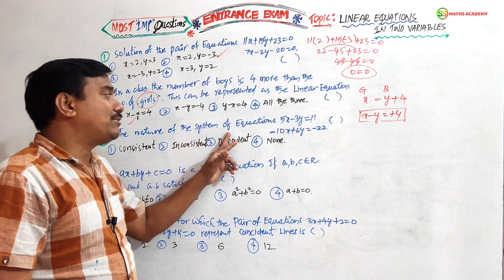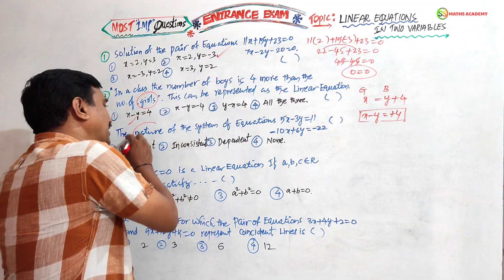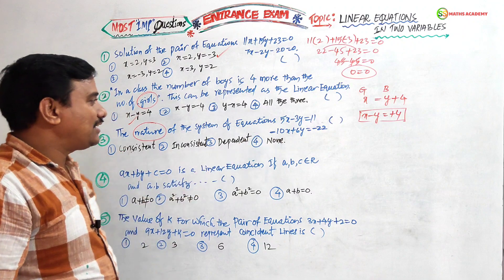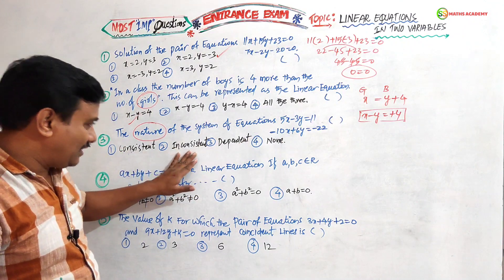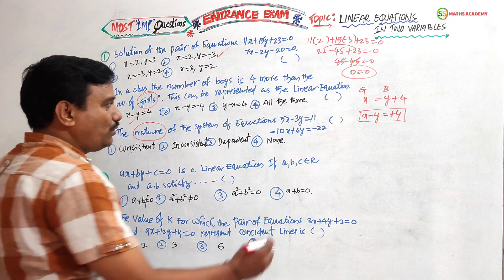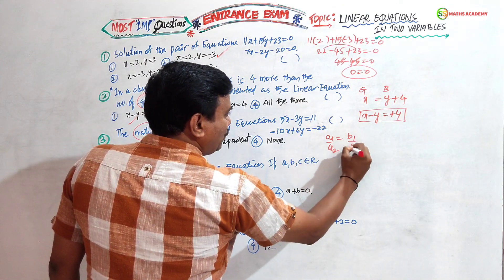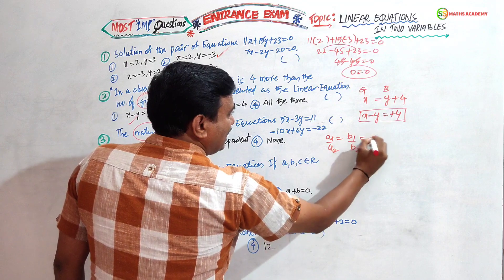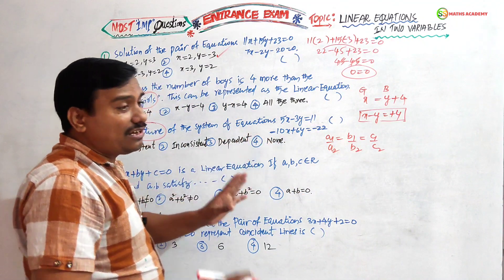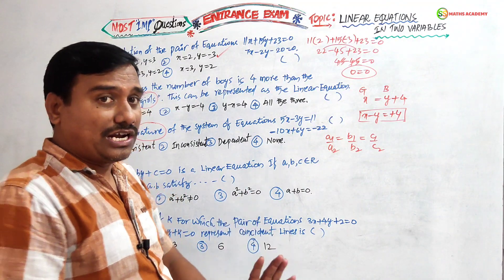Next question: the nature of the system of equations. The question asks whether it is inconsistent, dependent, or other. We check a₁/a₂, b₁/b₂, c₁/c₂. But these two equations are not in standard form — we should convert them. First: 5x − 3y − 11 = 0. Second equation: transfer terms to left side to get 10x − 6y − 22 = 0.